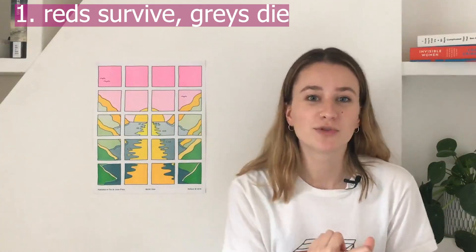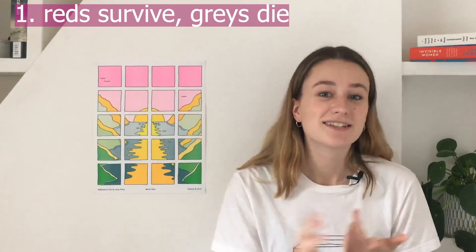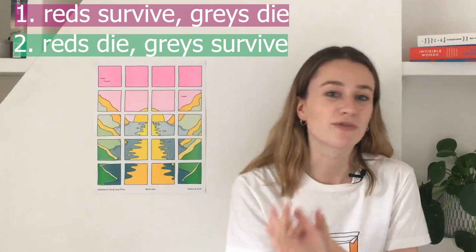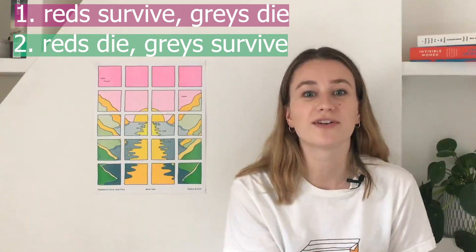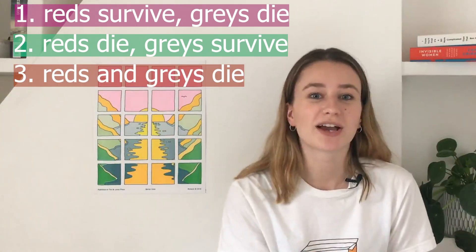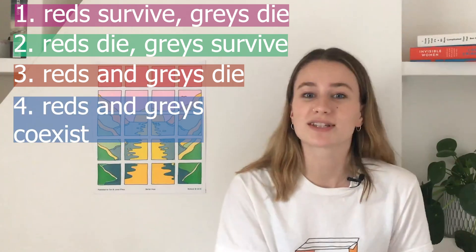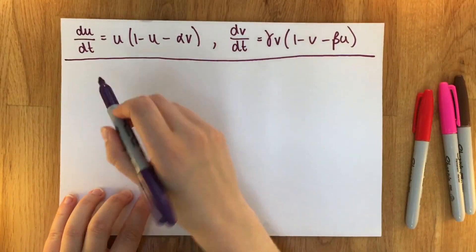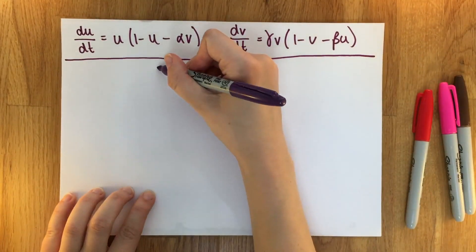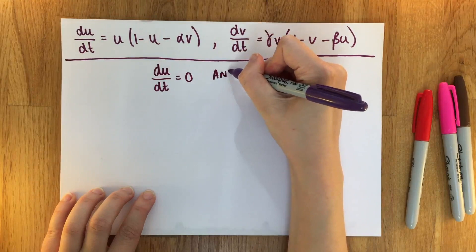There are four possible outcomes for our squirrels. First, the red squirrels survive and the grey squirrels die out and go extinct. Secondly, the reverse — grey squirrels survive and the red squirrels go extinct. Thirdly, both populations die out. And finally, they both coexist, where they both survive together. We want to find our steady states, which means finding the points where the population settles — i.e., the rate of change of population of both red and grey squirrels is equal to zero.